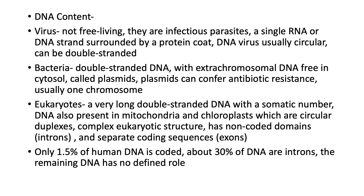You have a single RNA or DNA strand surrounded by a protein coat. The DNA virus is usually circular and can be double stranded. For bacteria, you have double stranded DNA with extra chromosomal DNA free in the cytosol — we call these plasmids. Plasmids can confer antibiotic resistance, and usually there is one chromosome with very small components of extra chromosomal DNA.